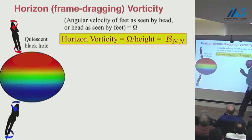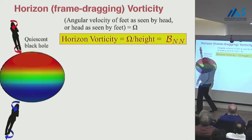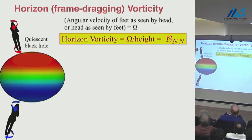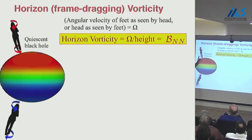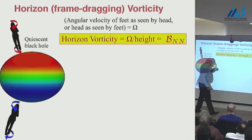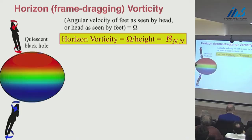Let me begin with frame-dragging. Suppose I have a Kerr black hole spinning around its axis. I put a person up near the north pole. She looks down at her feet and examines the precession of a gyroscope at her feet with respect to one at her head. She sees the gyroscope at her feet going around counterclockwise relative to the one at her head because of the frame-drag field. If n is the unit vector along her body, the angular velocity of her feet relative to her head, divided by her height, is the normal component of the frame-drag field.